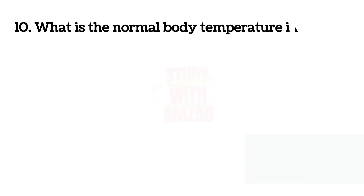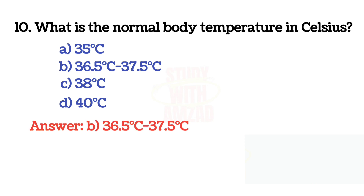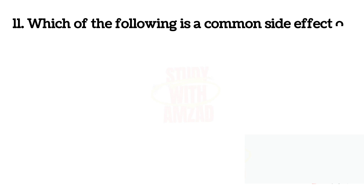Next question: What is the normal body temperature in Celsius? The correct answer is B: 36.5 to 37.5 degrees Celsius.